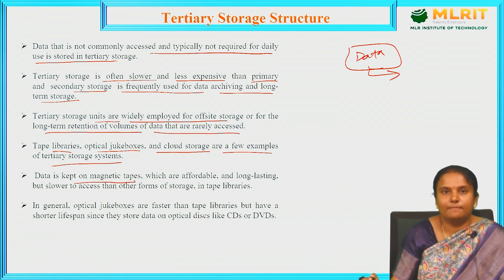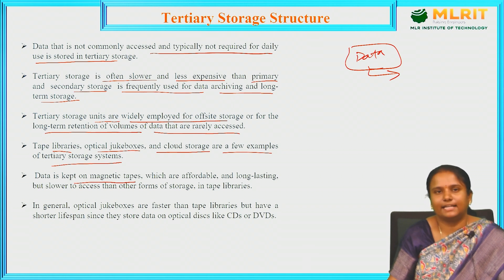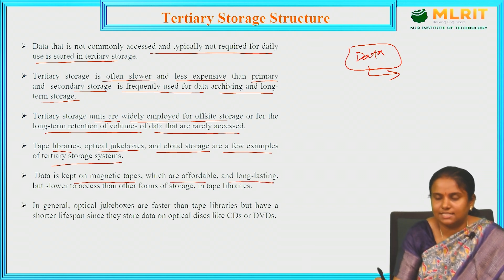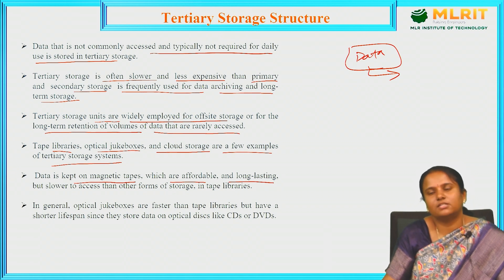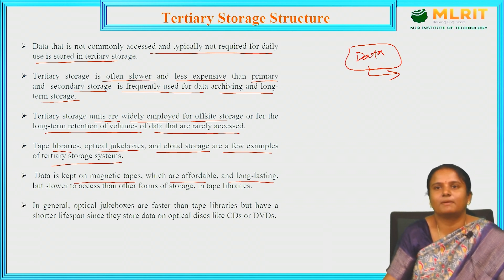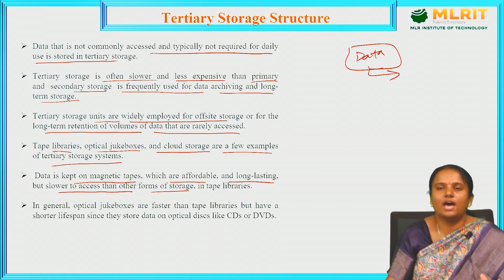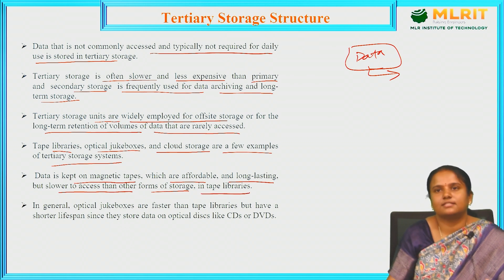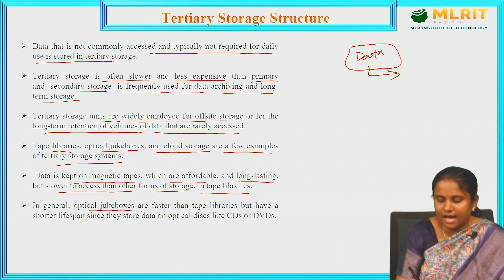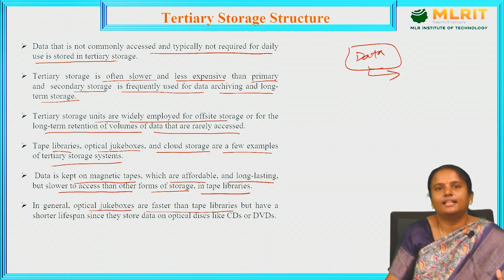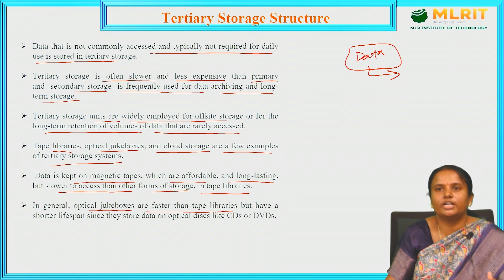Data is kept on magnetic tapes, which are affordable and long-lasting, but slower to access than other forms of storage. In general, optical jukeboxes are faster than tape libraries, because they can consist of more data to store or share.